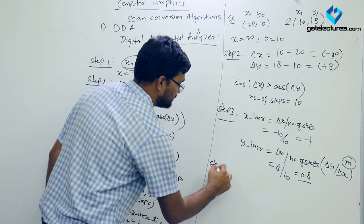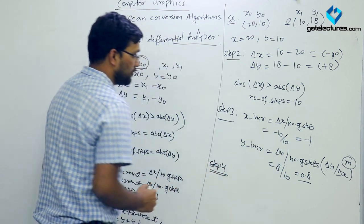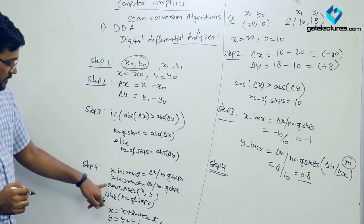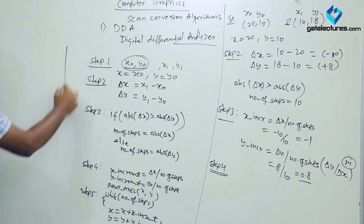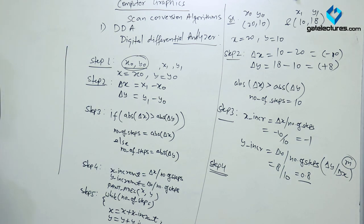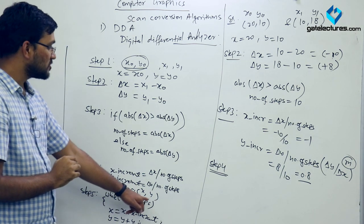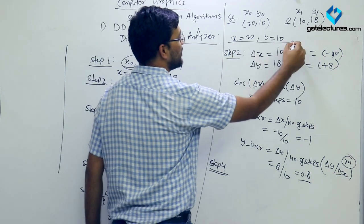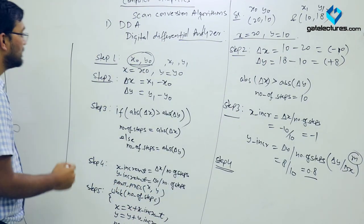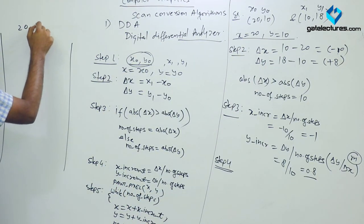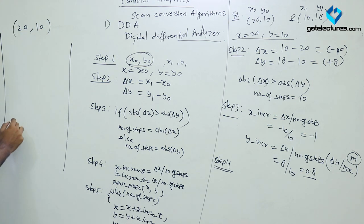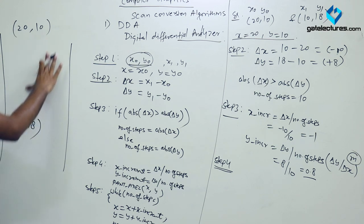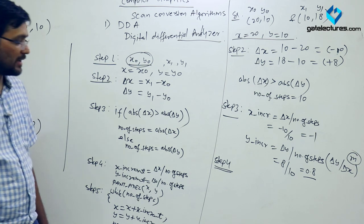In step 4 we first paint the pixel at the starting coordinates (X, Y). My first pixel to paint is (20, 10). I am noting this down in my pixel list. The target we need to reach is (10, 18), so we have to fill the pixels in between.